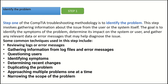Step one of the CompTIA troubleshooting methodology is to identify the problem. This step involves gathering information about the issue from the user or the system itself. The goal is to identify the symptoms of the problem, determine its impact on the system or user, and gather any relevant data or error messages that may help diagnose the issue. Common techniques include reviewing logs or error messages, questioning users, identifying symptoms, determining recent changes, duplicating the problem, approaching multiple problems one at a time, and narrowing the scope of the problem.